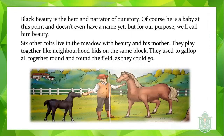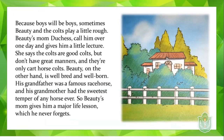Black Beauty is the hero and narrator of our story. Of course, he's a baby at this point and doesn't even have a name yet, but for our purpose we'll call him Beauty. Six other colts live in the meadow with Beauty and his mother. They play together like neighborhood kids on the same block, and they used to gallop all together round and round the field.